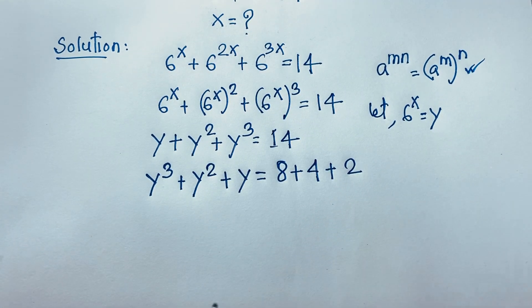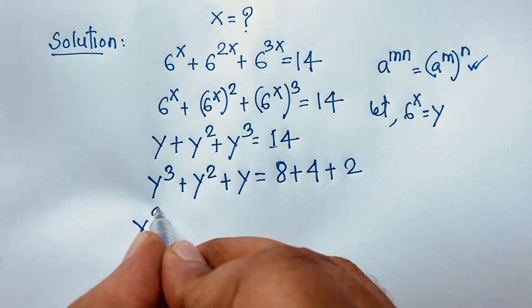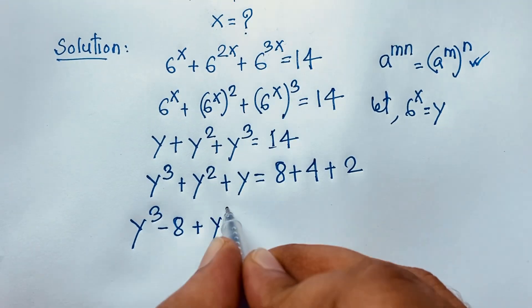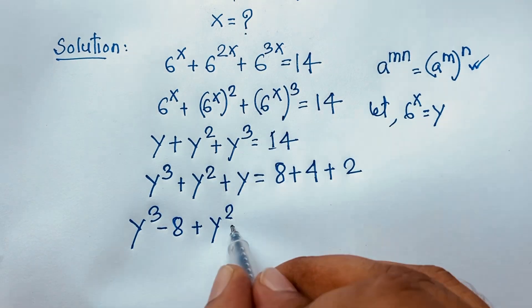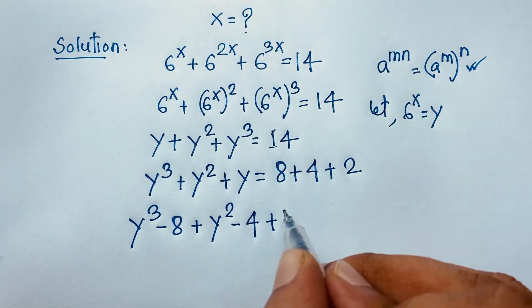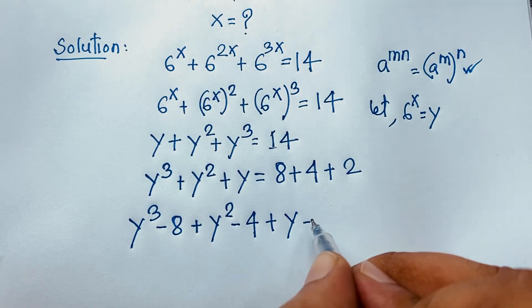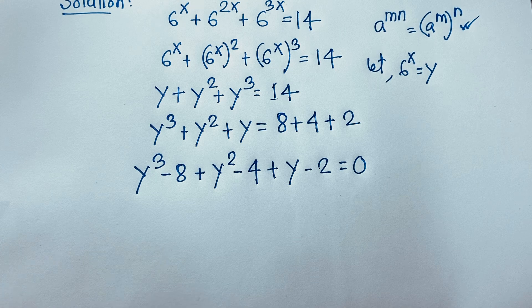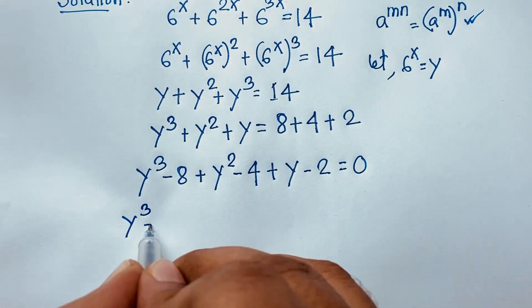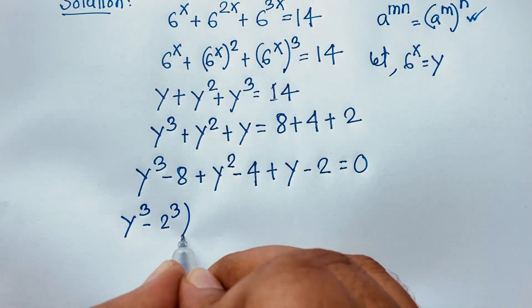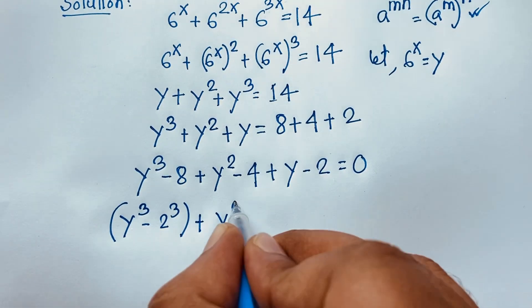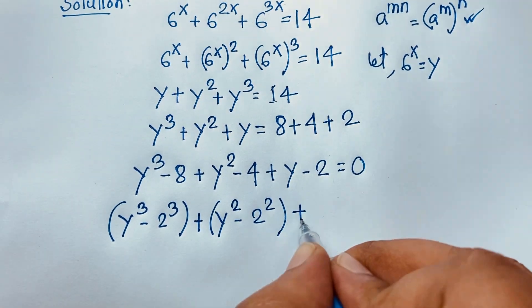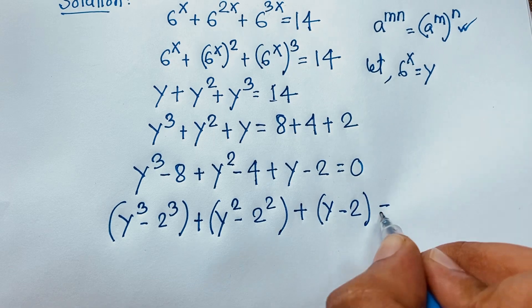Now rearranging, we have y cubed minus 8 plus y squared minus 4 plus y minus 2 is equal to 0. Here 8 is 2 to the power 3, and 4 is 2 to the power 2. So: y cubed minus 2 cubed, plus y squared minus 2 squared, plus y minus 2 is equal to 0.